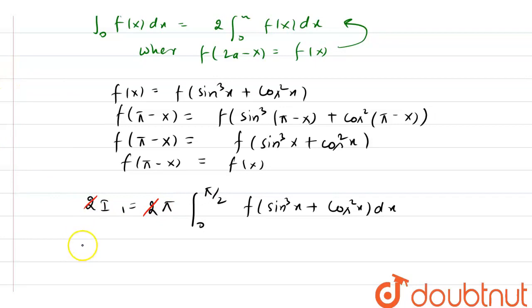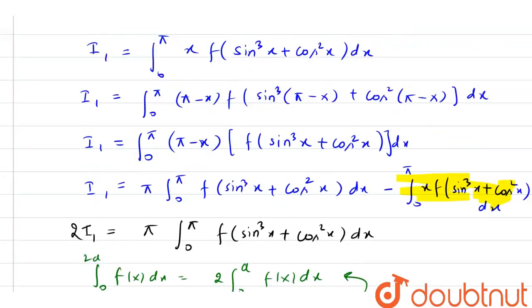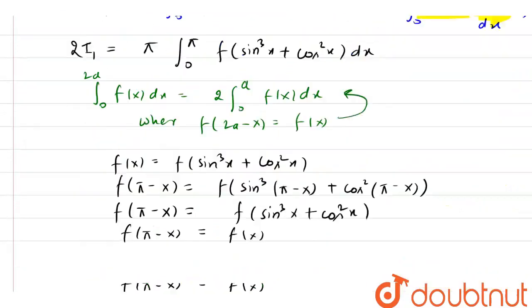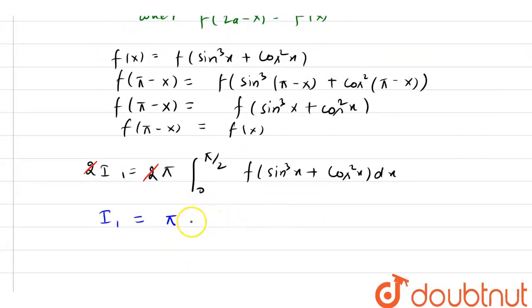We have i1 equals pi times, now this is the value of i2. If you look at the question, the value of i2 is 0 to pi by 2, f sin cube x plus cos square x, so this is the value of i2. So I can say i1 equals pi times i2, and this is the relation we have.